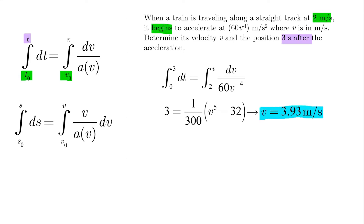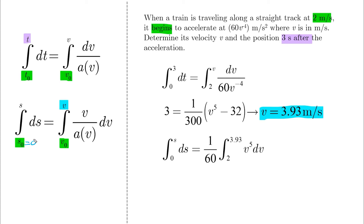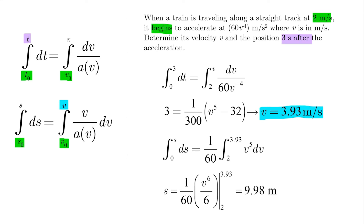Since we have the velocity after three seconds, we can look at the second equation. v is available now, v0 is also available, and s0 can be taken by default at the origin. Applying the integration, the negative power of a goes up, resulting in v to the power of 5, and this simple integration results in s equals 9.98 meters.